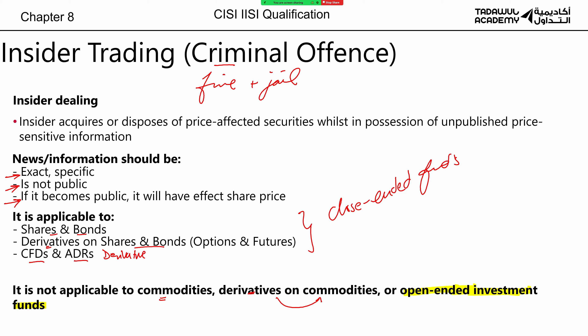In the exam, CISI may ask which of the following is covered or protected under insider trading laws and give you a list of funds. Choose the close-ended funds, because those are the ones protected under insider trading laws. This is how CISI combines chapters 7 and 8 together, forcing you to remember which funds are closed vs. open-ended and which ones are covered by insider trading.